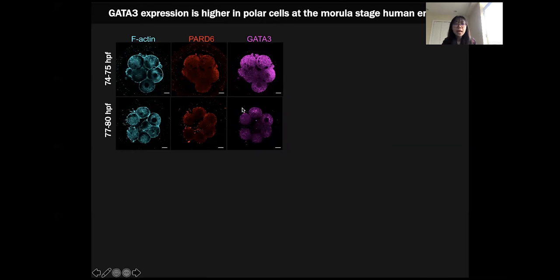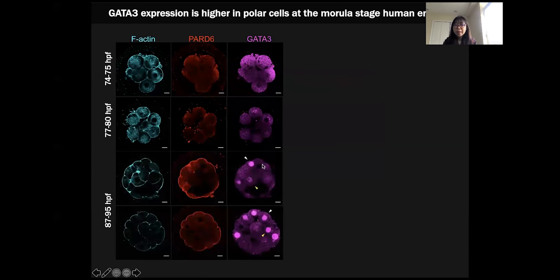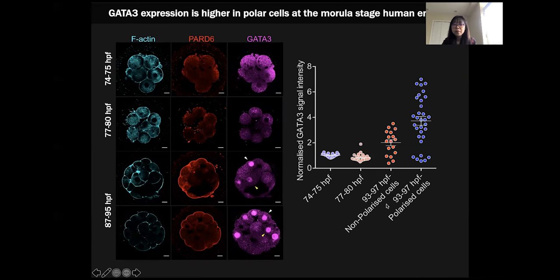At the early time point, we don't see much GATA3. After one day of culture, we begin to see a lot of GATA3-positive cells. Interestingly, GATA3 at this time point is expressed in both outer and inner cells. But if you quantify the signal intensity, the polarized cells end up with higher GATA3 expression than apolar cells. These results suggest that there are polarity-dependent and independent pathways that control GATA3 expression. Nevertheless, polarity seems to serve as a positive regulator to reinforce GATA3 expression in polarized cells.